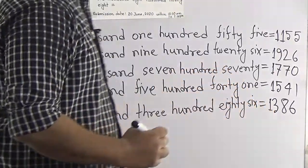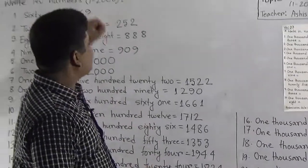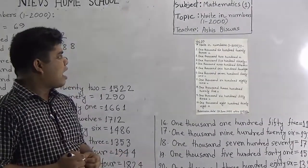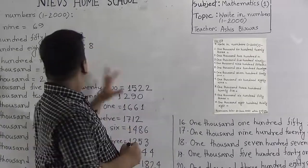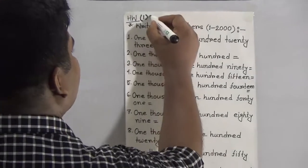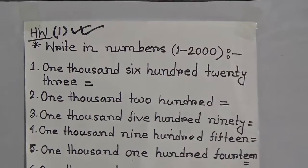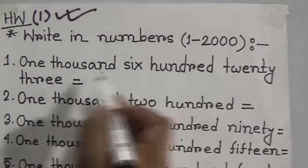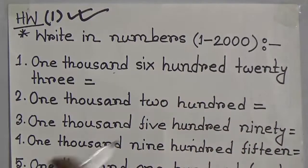This is our today's topic: writing numbers. Students, I give you some seatwork (SW) on this topic, that means writing numbers. This is SW number 1. Here, 1,623 — you must write the answer. Then: 1,200, 1,590, 1,915, 1,114.